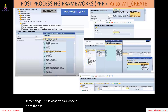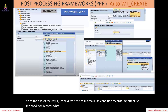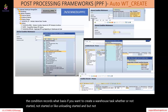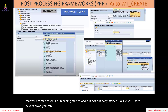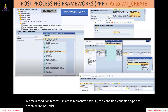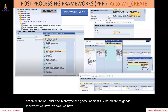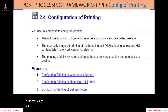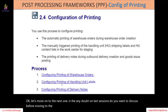You need to maintain condition records — that is important. The condition records: what basis, if you want to create a warehouse task — whether not started, or unloading started but not put-away started — several ways you can maintain condition records. The condition type and action definition, the document type and GURS movement. Based on the GURS movement, we requested to create a warehouse task automatically. Now, any doubts on last sessions before moving to configuring the printing of handling unit labels?